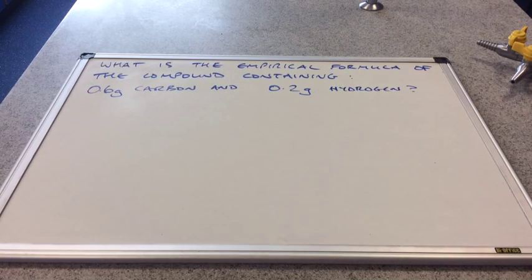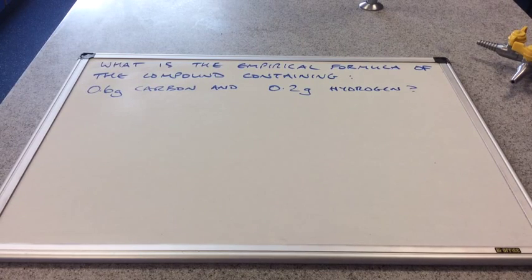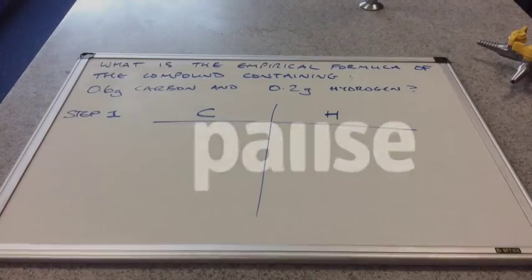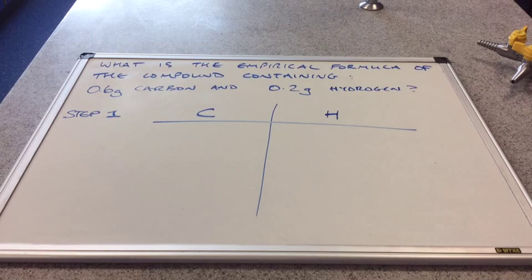So we'll start off with this question here. What is the empirical formula of the compound containing 0.6 grams of carbon and 0.2 grams of hydrogen? If you want to have a go yourself before we go through the solution, then obviously press pause and then play on when you're ready. So because this is the first calculation, I'm going to break it down into a step-by-step approach. And this is the way I was taught years and years ago, and it's never let me down. So I always make this guarantee to my students, if you follow this method to the letter, you will never get these wrong.